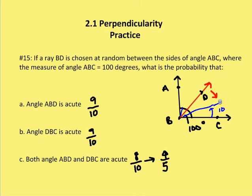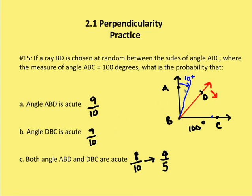The next question asks when is angle DBC going to be acute. It's the same type of problem, but now we're measuring from the other side. Angle DBC will be acute only when ray BD is more than 10 degrees away from side BC. That's 90 degrees out of 100, so DBC is not acute for only 10 out of 100 degrees, and it is acute for 90 out of 100 degrees — 90% of the time.